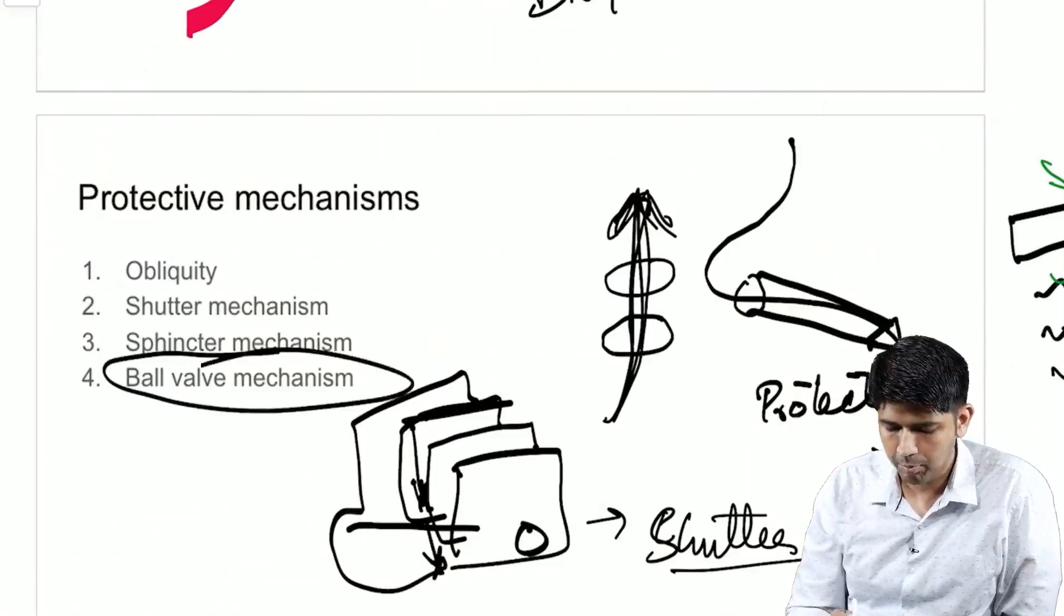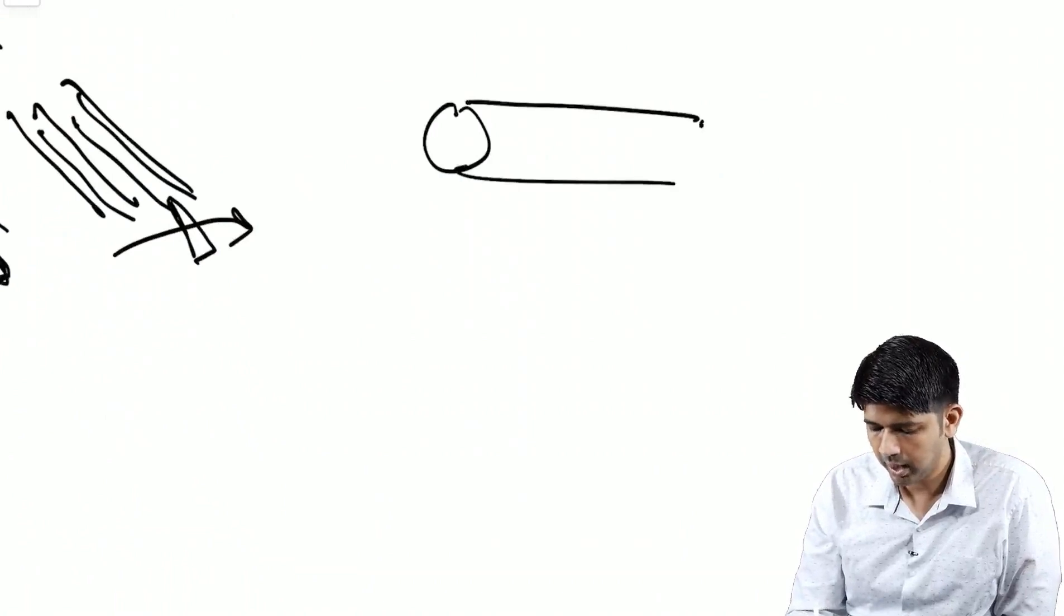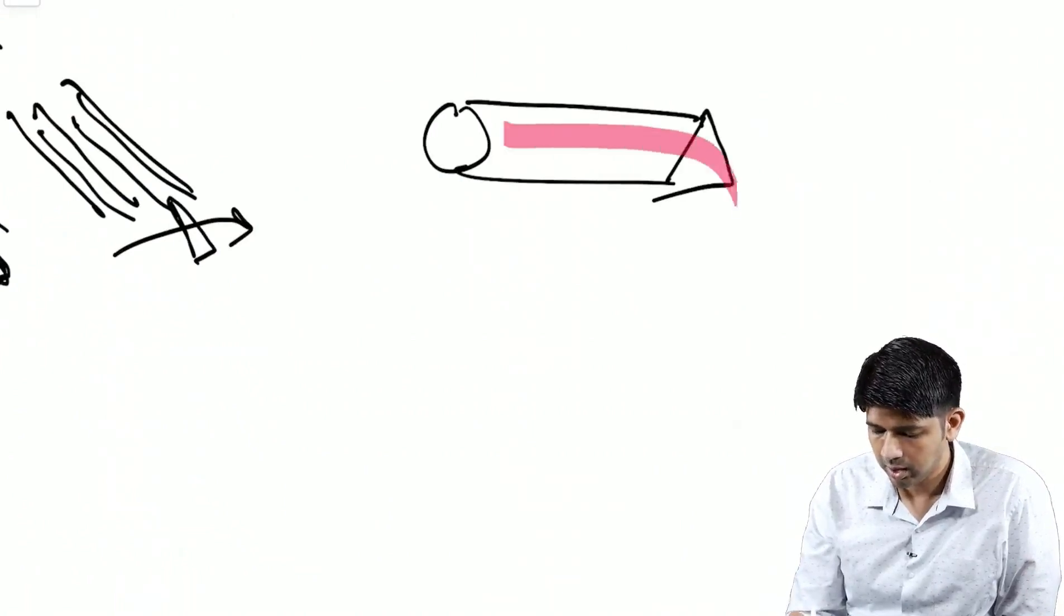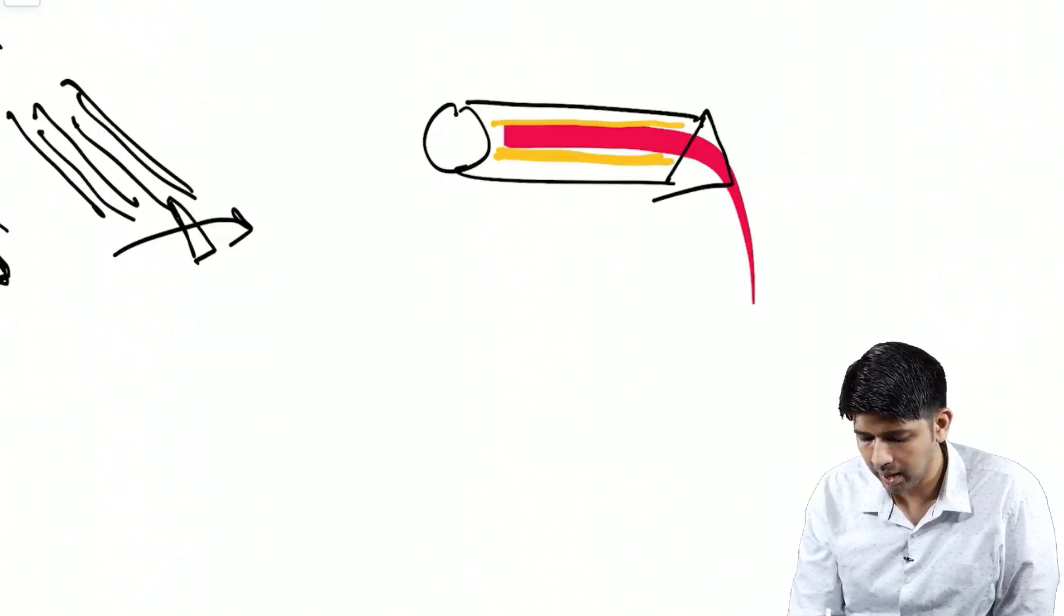And the last one is the ball valve mechanism. So, if this is the deep ring, this is the inguinal canal. We know that inside are the cord structures. At the same time, we also know that these cord structures are covered by the cremasteric fascia or the cremasteric muscle.